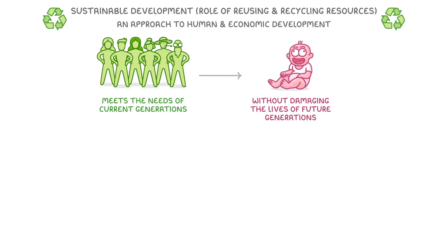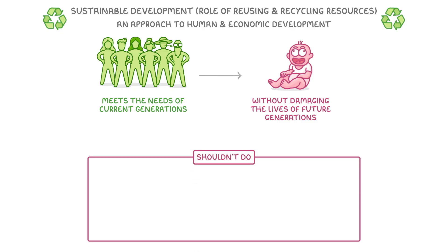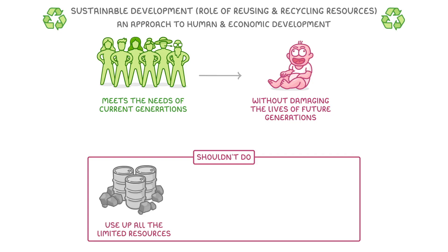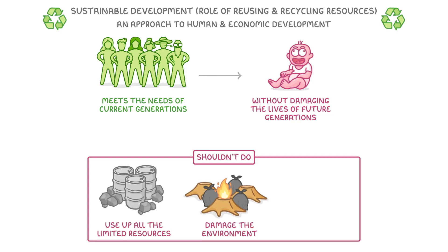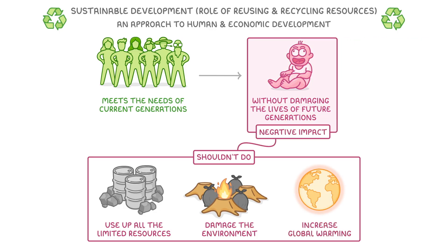This might all seem a bit vague, but in practice it basically means that we shouldn't be doing things like using up all the limited resources on our planet, or damaging the environment, or increasing global warming, because these things will all have negative impacts on future generations.